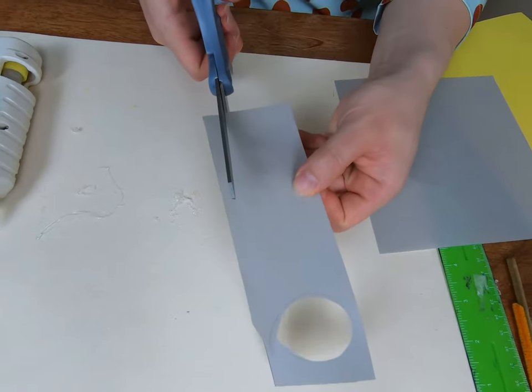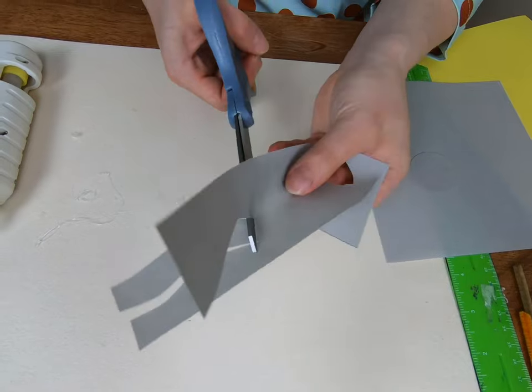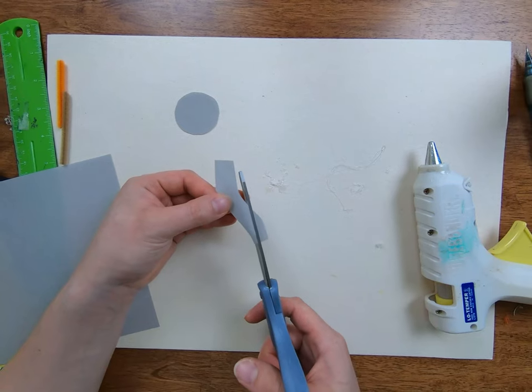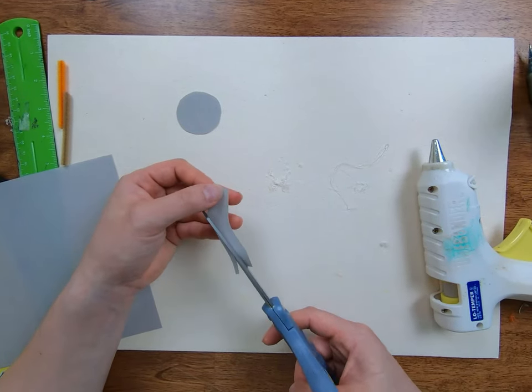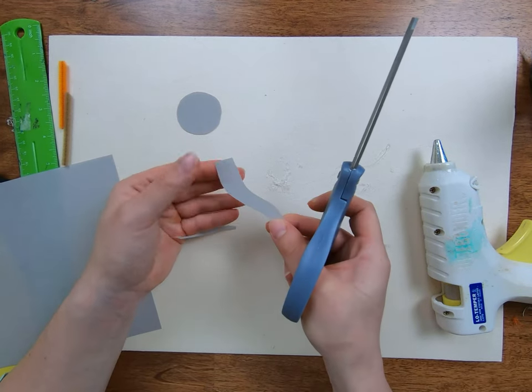Now cut out a little trunk for your elephant. I'm going to make just a little wavy trunk here. I'm just going to trim my trunk down at the bottom a little bit so it's more tapered, like a real elephant's trunk would be. There, that looks terrific.